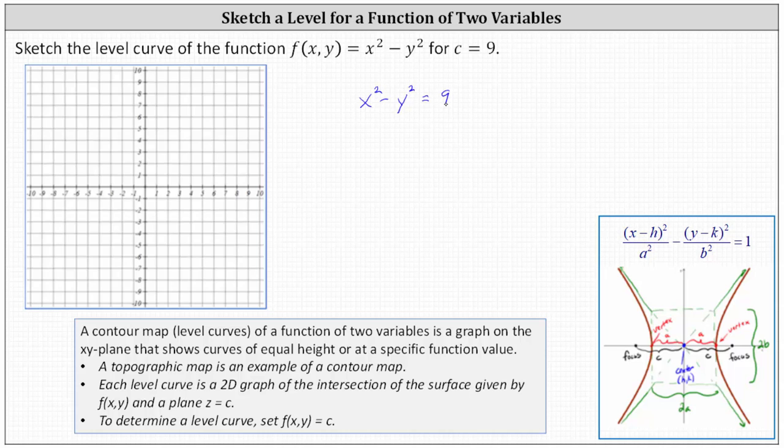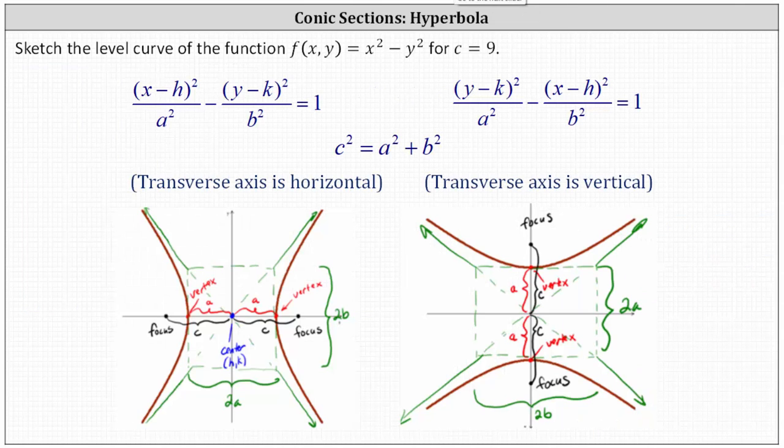Let's review some notes on how to graph a hyperbola. If we have the x part minus the y part equal to one we have a horizontal transverse axis and the hyperbola opens left and right. If we have the y part minus the x part equals one then we have a vertical transverse axis and the hyperbola opens up and down. In our case because we have x squared minus y squared equals nine we are going to have a horizontal transverse axis.